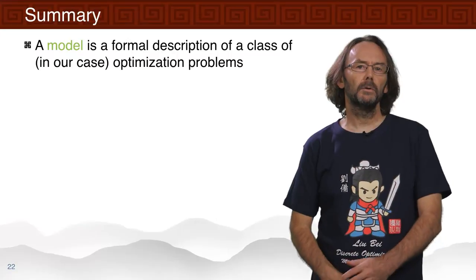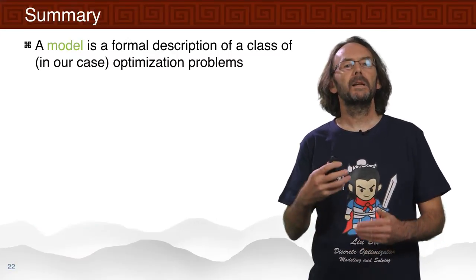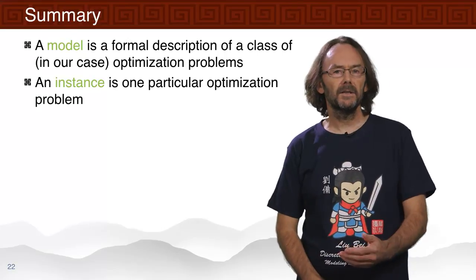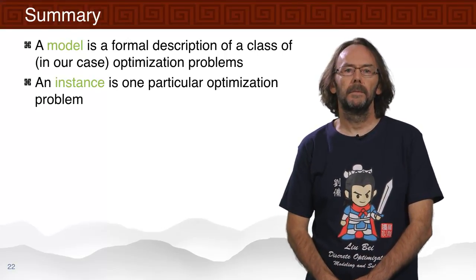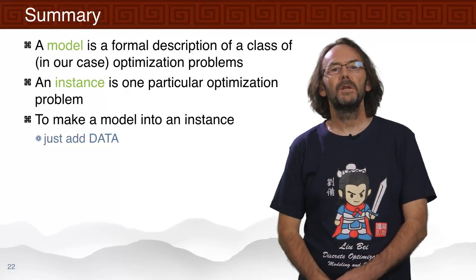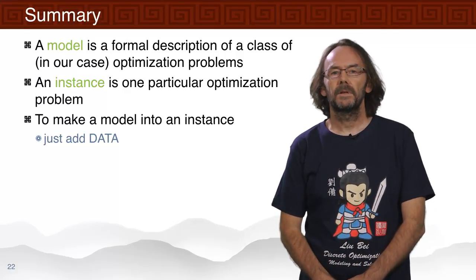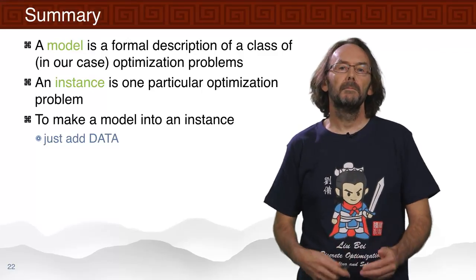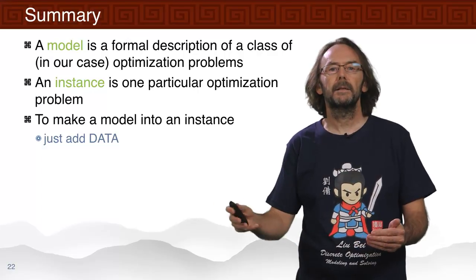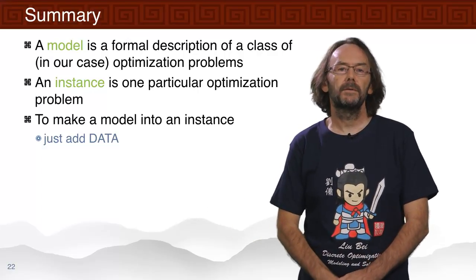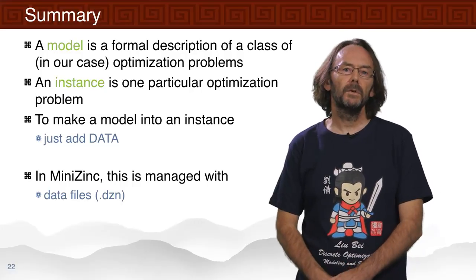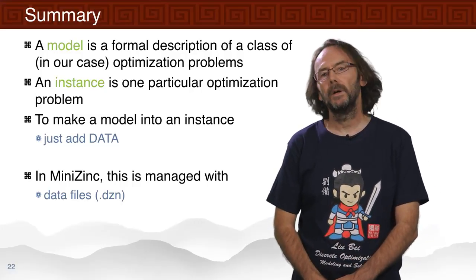In summary, a model is a formal description of a class of optimization problems, and an instance is one particular optimization problem. You get an instance from a model by adding data. We build models that can answer many different optimization problems, then give them different data to solve different instances. In MiniZinc, we do this using data files, which are .dzn files.